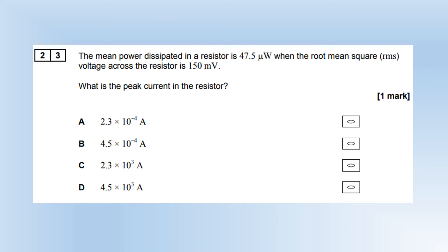The mean power dissipating a resistor is 47.5 microwatts. When the RMS voltage across it is 150 millivolts, what is the peak current? Average power is the RMS current times the RMS voltage. The RMS current is the peak current divided by root 2. We can substitute that in, rearrange it, plug our numbers in, and we end up with option B.